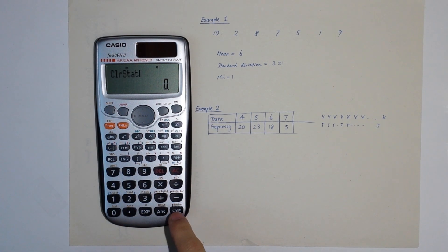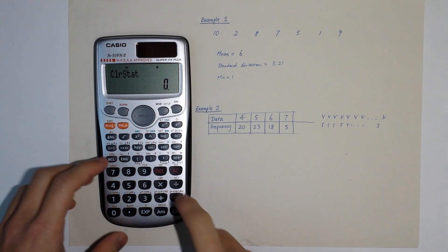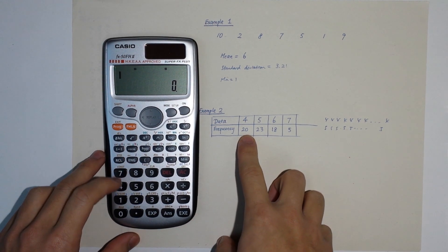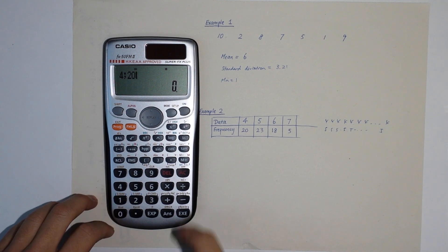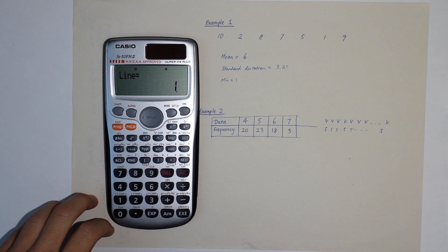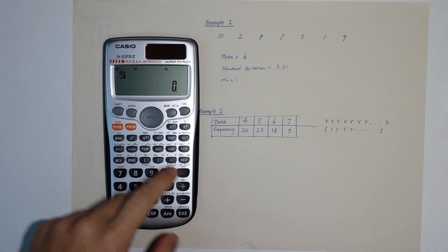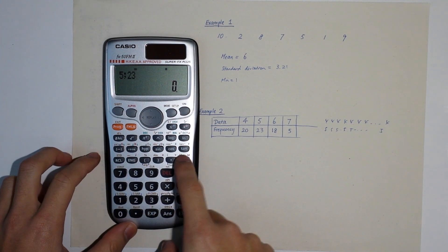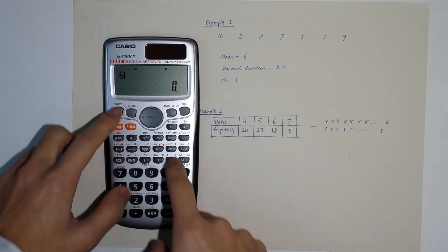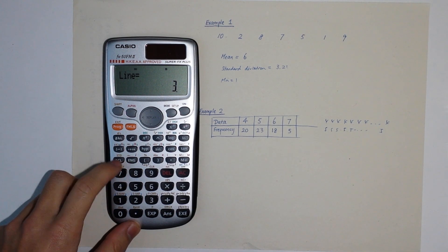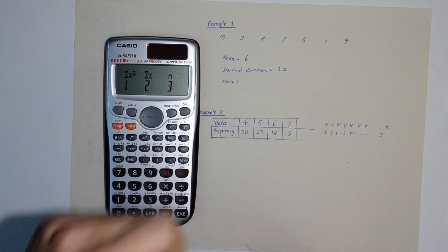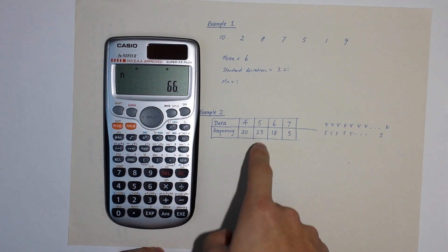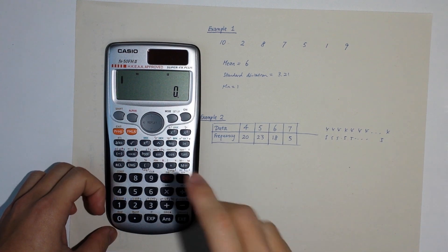To enter data with frequencies, first clear stats with Shift 9 1. Then enter: 4, Shift comma (semicolon) 20, M+ to enter 4 with frequency 20. Then 5 semicolon 23 M+, 6 semicolon 18, 7 semicolon 5 M+. To check all data is entered, press Shift 1 — you'll see n, the total number of data, which should be 66.